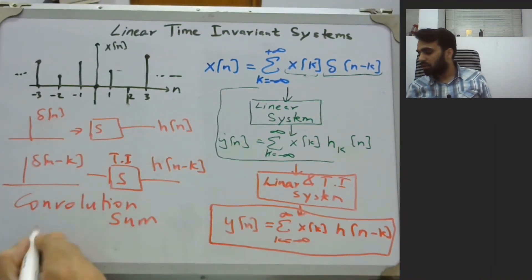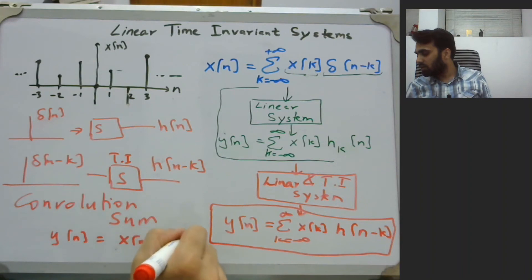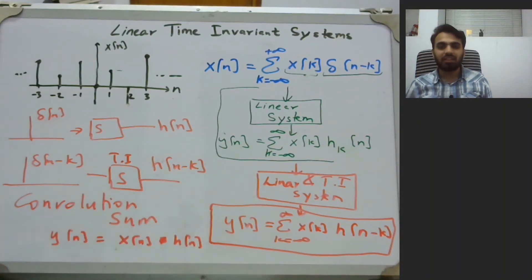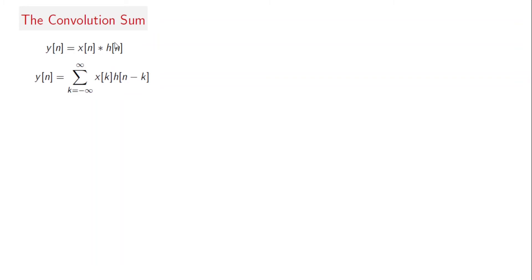A shorthand notation for the convolution sum is y(n) = x(n) * h(n), where * denotes the convolution operator. Mathematically this is Σ_{k=-∞}^{∞} x(k)·h(n-k). Let us now look into one example to understand convolution further.